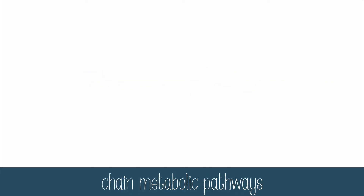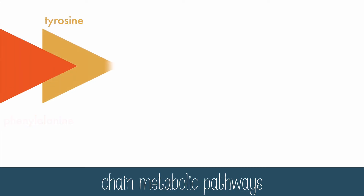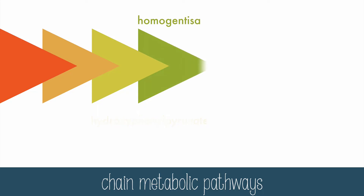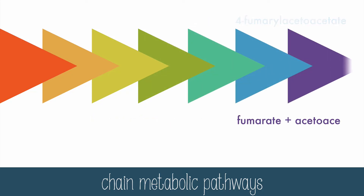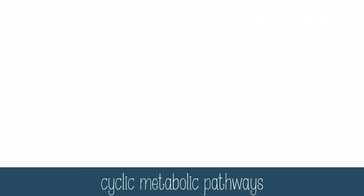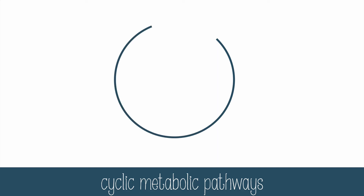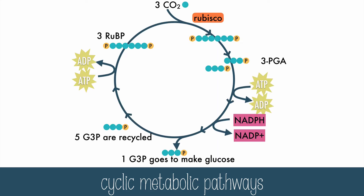Metabolic pathways can occur in a chain of reactions, like the pathway that converts phenylalanine into fumarate and acetyl acetate, which takes six steps to finally reach the end products. Some metabolic pathways occur in a cycle instead of a chain, like the Calvin cycle of photosynthesis, which uses carbon dioxide to make glucose.